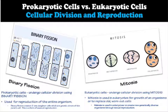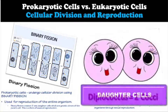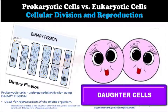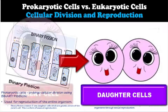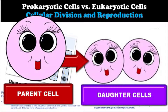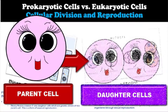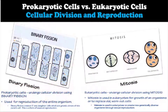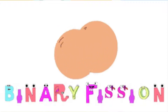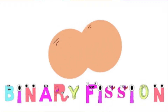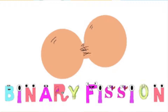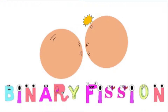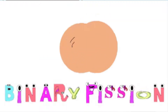Prokaryotic cells undergo cellular division using the process of binary fission. Binary fission is used for the reproduction of the entire organism. Binary fission creates two daughter cells, which are genetic clones of the parent cell. This is a form of asexual reproduction.